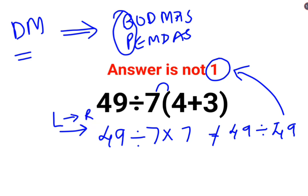Whatever operation comes from your left-hand side first will be done first. So 49 divided by 7 is what? 7. Then 7 multiplied by 7. So the answer for this question is supposed to be 49.